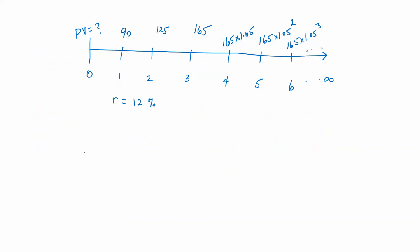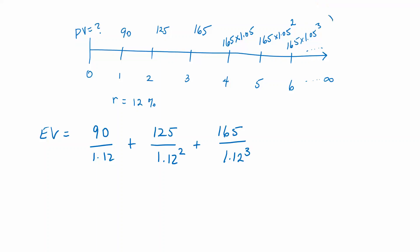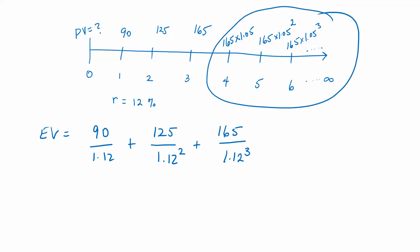Now that we have the timeline, that's all we need to look at. I'm going to calculate the enterprise value. We have an uneven cash flow stream, so we're going to discount each one of those cash flows for the first three years individually. Then we have the cash flows that grow at a constant rate, which will give us a terminal value — we'll use the growing perpetuity formula.